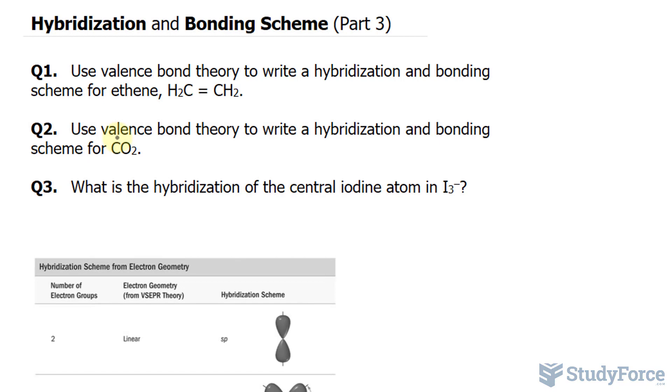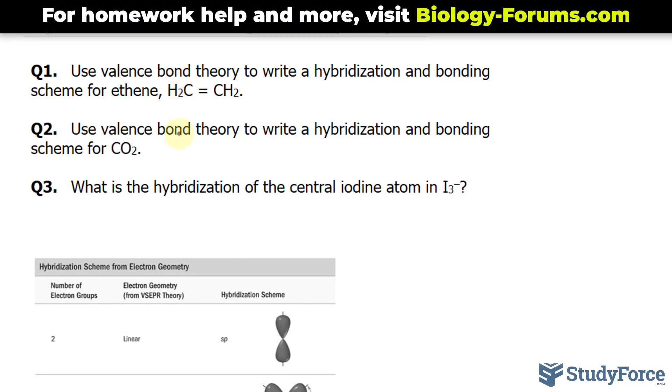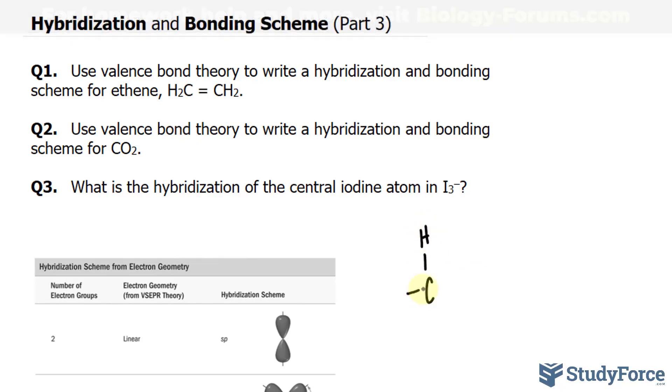Just as before, I want to start with a Lewis structure. We have a CH2 and a CH2 double bonded, and that looks like this. A carbon single bonded to two hydrogens, and that's double bonded to another carbon.